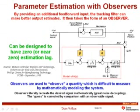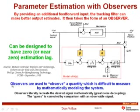Adding a feed-forward component to the tracking filter results in what is called an observer. The same signal stimulating the control system is also fed into the model as a feed-forward signal. Observers are used frequently in motor control to minimize or eliminate the estimation lag of the tracking filter.